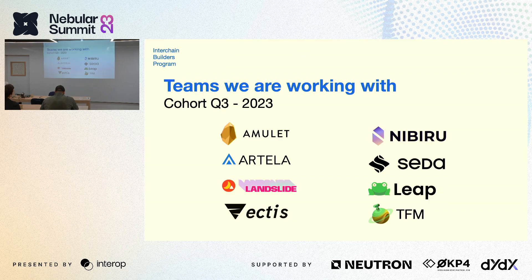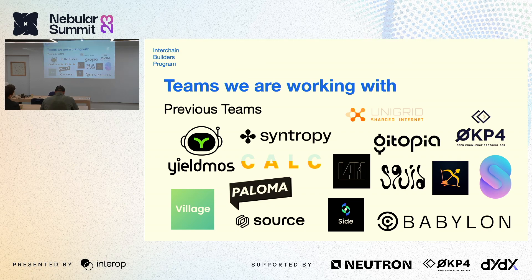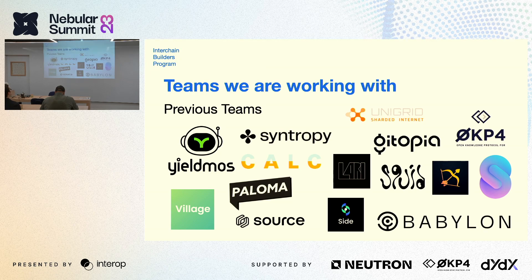The latest cohort we just announced includes eight teams — you can see them listed. Previous teams we've worked with include Yieldmos, Calc, Utopia, Squid, Paloma, and Source, among others. In terms of program structure, the idea is to support teams on an ongoing basis — fundraising rounds easily take three to four months, and teams may need support on mainnet launch or other matters half a year down the line. We want to make sure we're still around and don't offboard teams after just three months. The program is designed for longevity and long-term partnership.